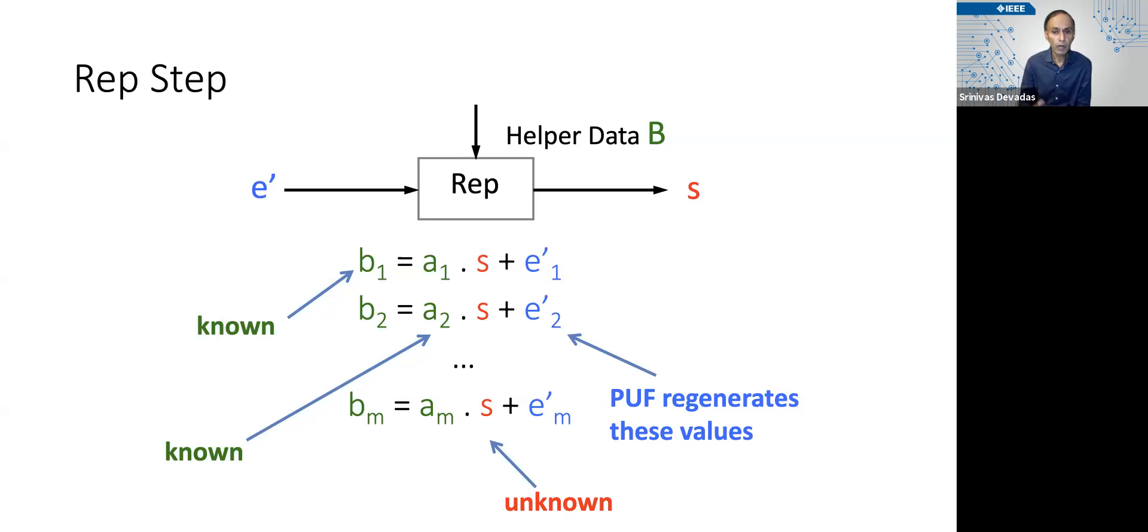And now when we want to reproduce this, well, we know the bᵢs. We're going to store this publicly. That's the helper data. The a's are hard-coded on the chip. We obviously don't know s because s was this ephemeral secret that disappeared after the gen. We tried to encode it in the helper data.